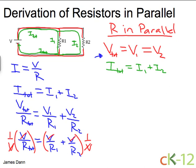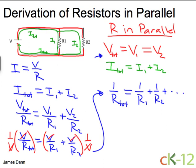So what are we left with? Well, we're left with the fact that for resistors in parallel, the total resistance of the circuit is equal to 1 over the first resistor, plus 1 over the second resistor, and so on. As many as you have in parallel.